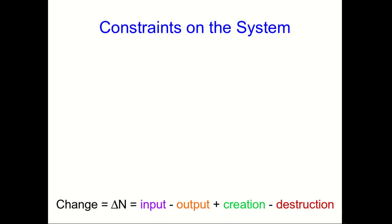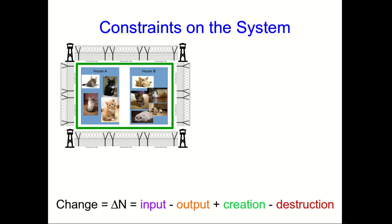For example, we might set up a situation so that input and output of cats in our system is impossible. If that happens, now our change between two times in the number of cats in our house is just going to be creation minus destruction.